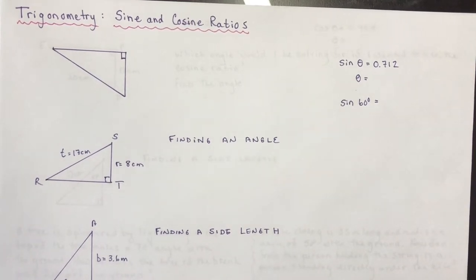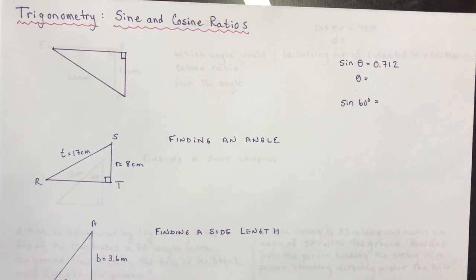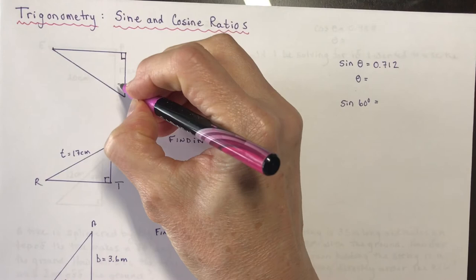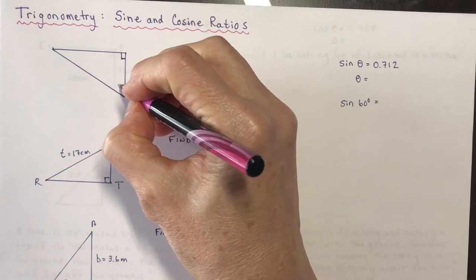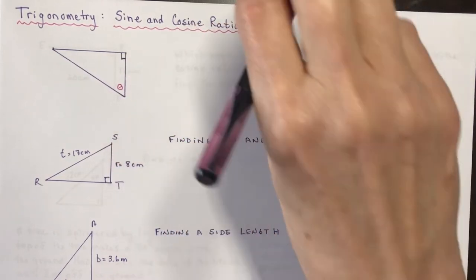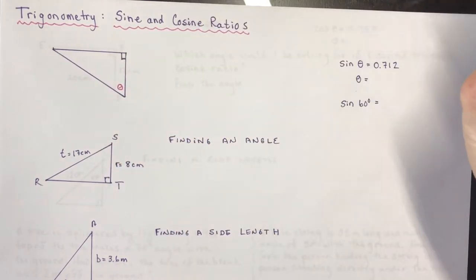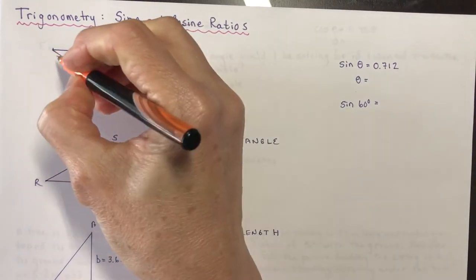Trigonometry: sine and cosine ratios. I'm going to start with a little review from yesterday's lesson about how to label the sides of a triangle so you can properly determine which trig ratio to use. I'm going to label this angle here theta and this other angle over here alpha.